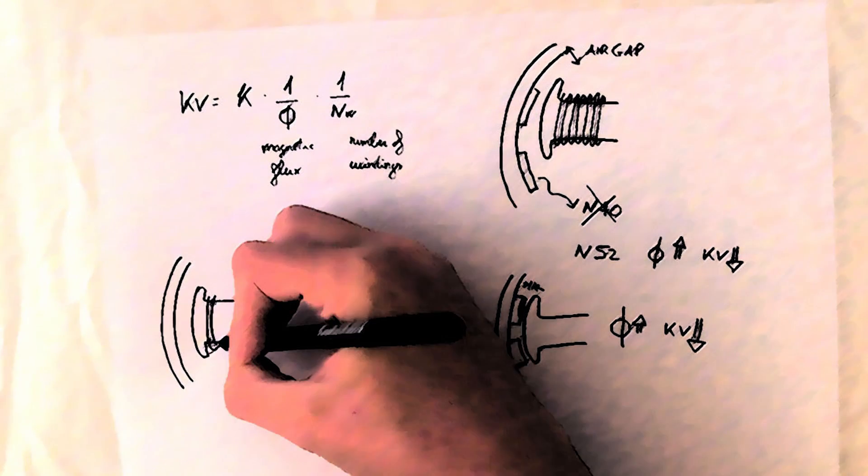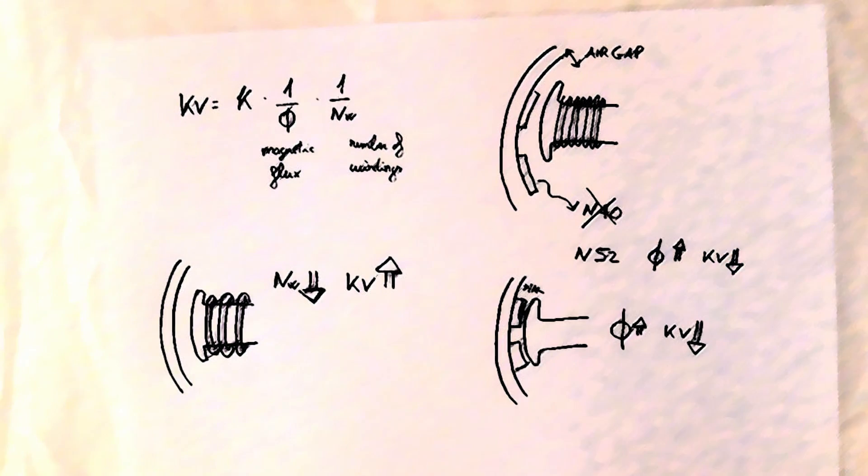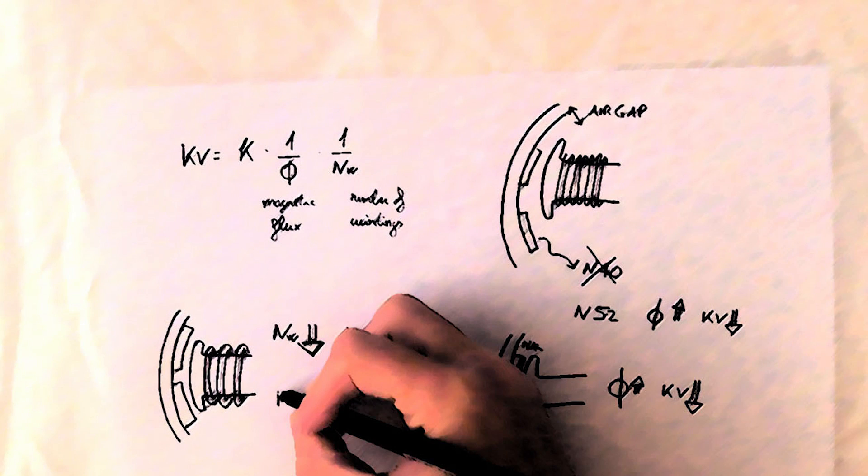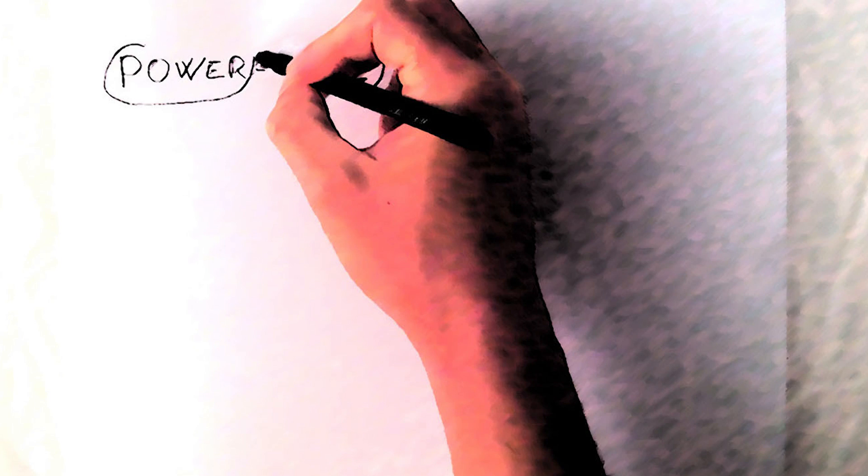To compensate for this and raise the KV, we use fewer coils. And since the available space is fixed, the wire can be thicker. Thicker wire has less resistance, thus it can carry more current. Since the power is voltage times current, if the current goes up, the power goes up too.